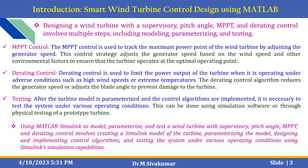The next important one is the maximum power point tracking control. This control is used to track the maximum power point of the wind turbine by adjusting the generator speed. This control strategy adjusts the generator speed based on wind speed and other environmental factors to ensure that the turbine operates at the optimal operating point.